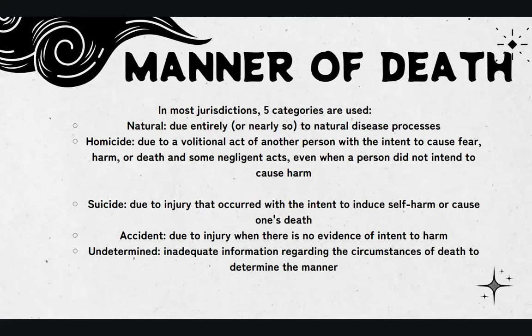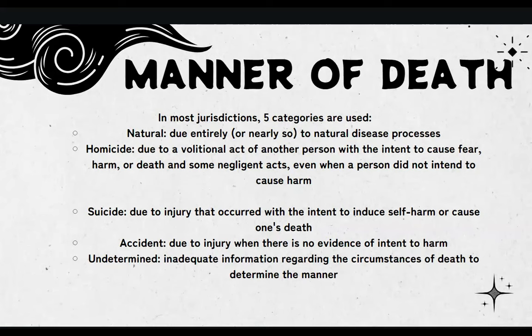In most jurisdictions, five categories are used. First is natural — due entirely or nearly so to a natural disease process. Second is homicide — due to a volitional act of another person with the intent to cause fear, harm, or death, and some negligent acts, even when a person did not intend to cause harm. Examples of negligent acts designated as homicide include a caretaker leaving an illicit drug on a table which a toddler consumes and dies from an overdose, or an intoxicated adult falling asleep on top of an infant, resulting in asphyxiation of the child.